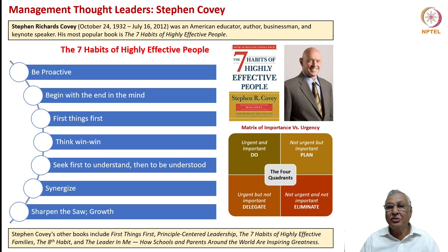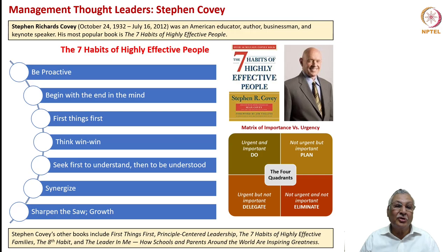Another important thought leader is Stephen Covey. Many people familiar with self-help books know this professor. He says there are seven habits of highly effective people: first, be proactive — anticipate what needs to be done ahead of the event occurring; second, begin with the end in mind — don't just look at what to do now, have the goal in mind and proceed towards it; third, put first things first — prioritize what you need to do.